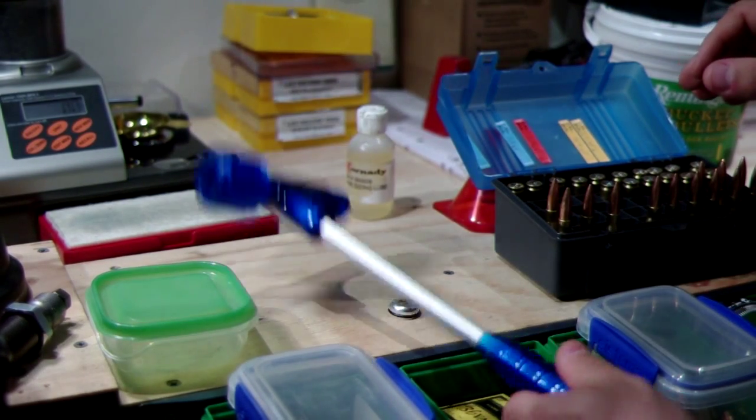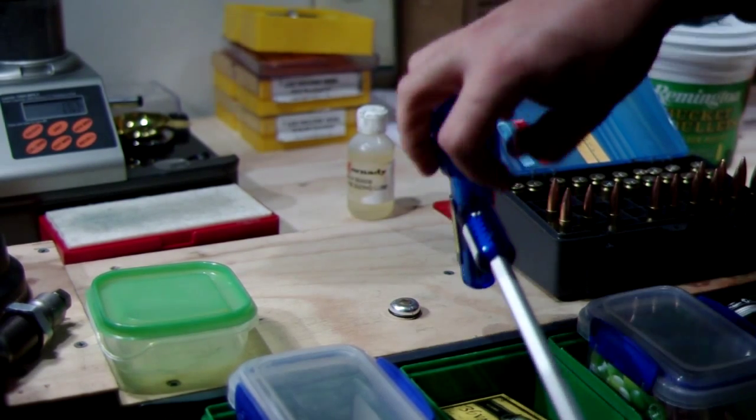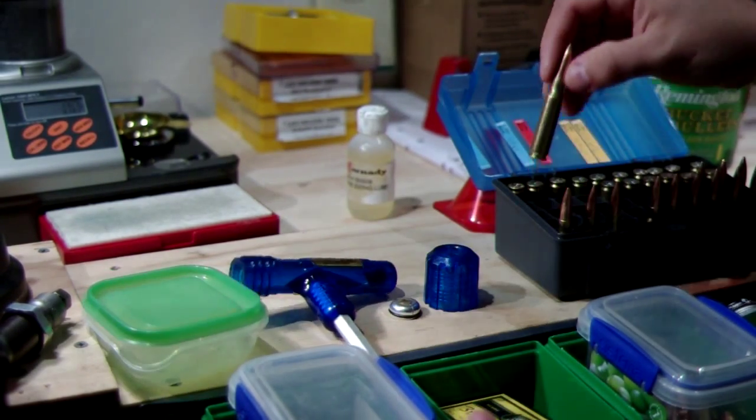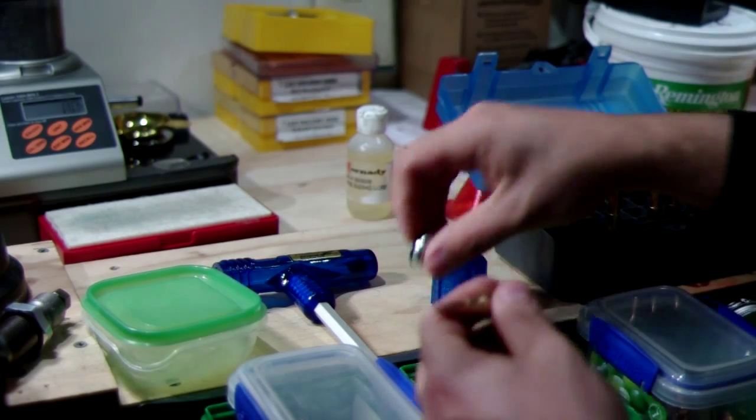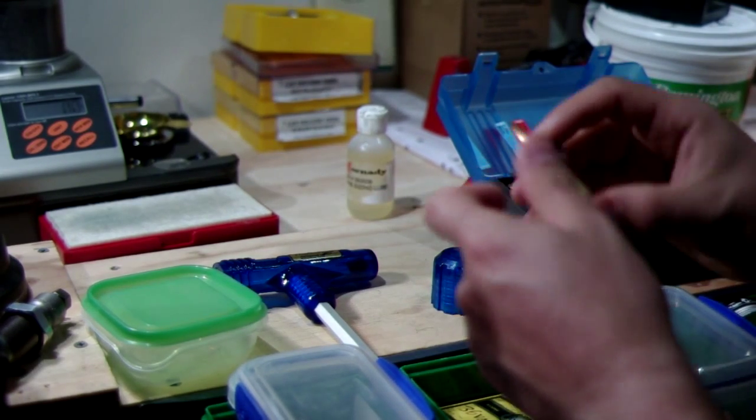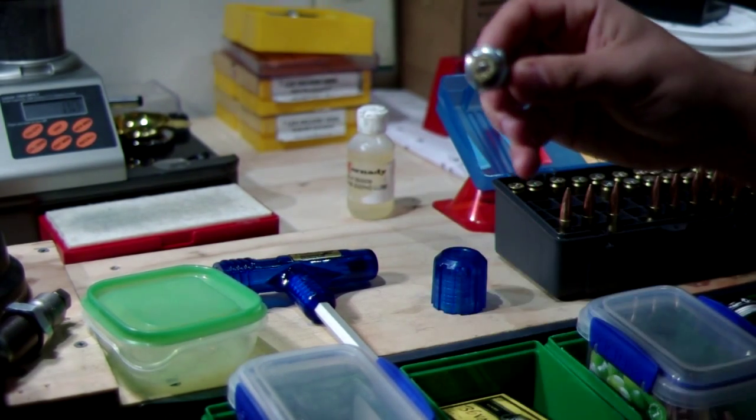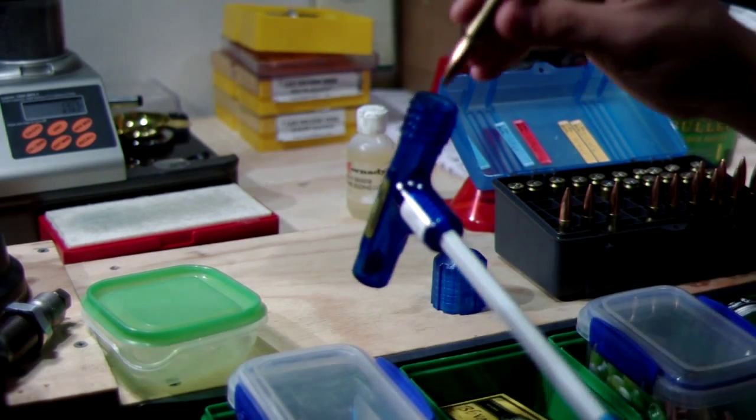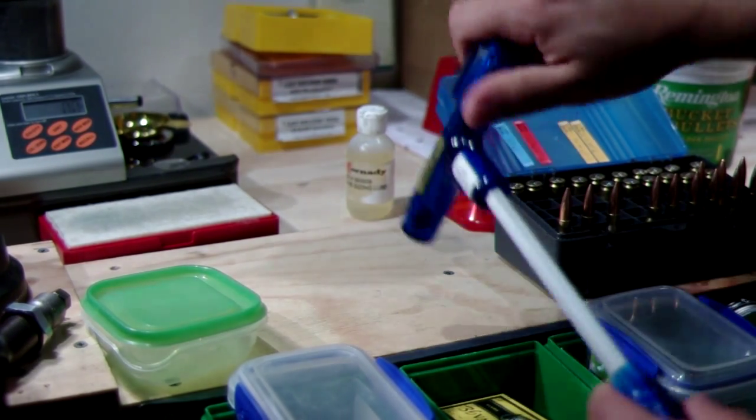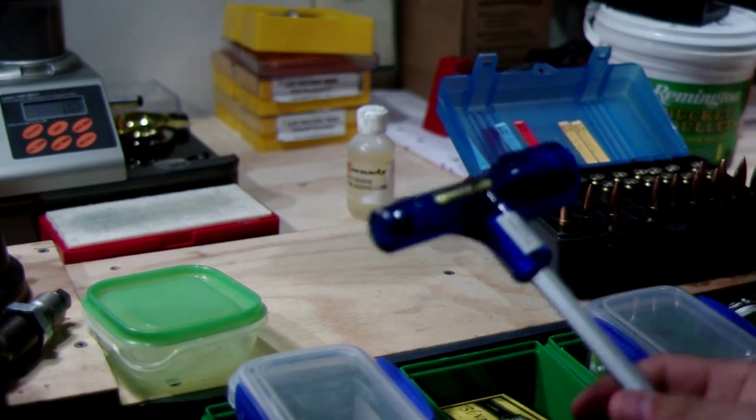So, to show you how to load the bullet puller, take the cap off, pop the whole bullet into the collet so it catches on the rim, load the collet and bullet into the hammer or bullet puller and now you're ready to go.